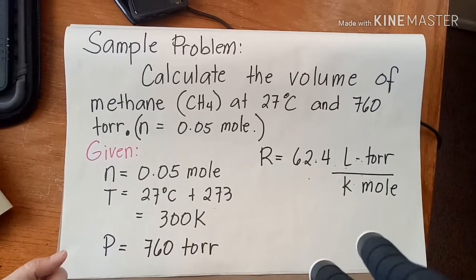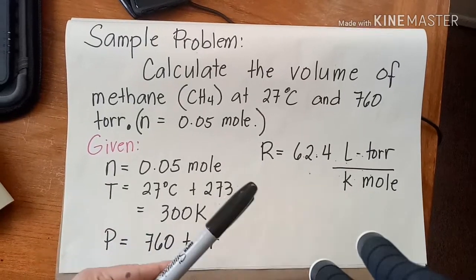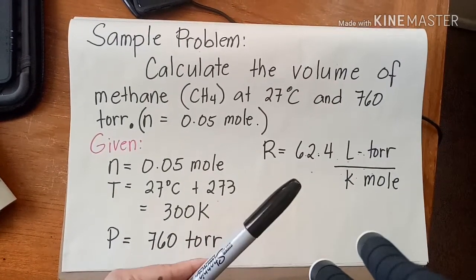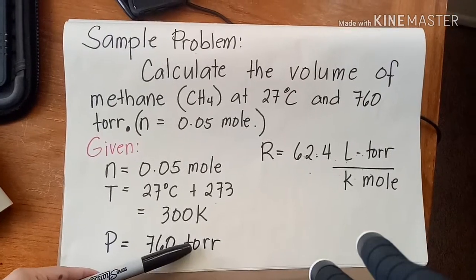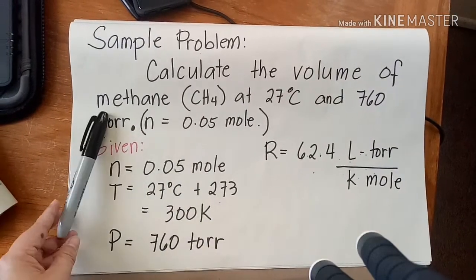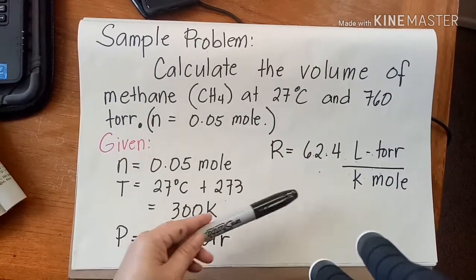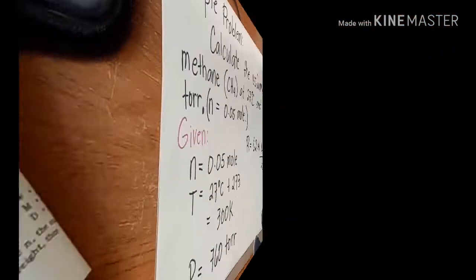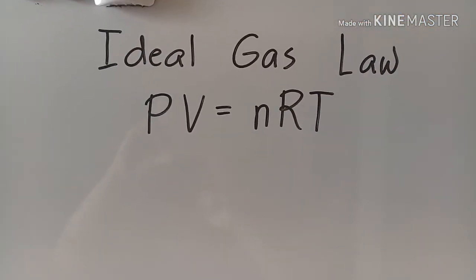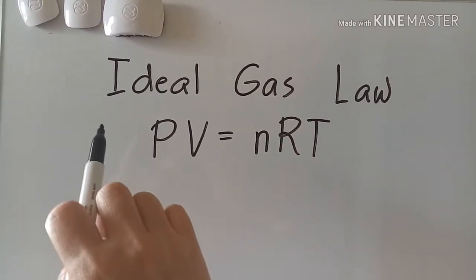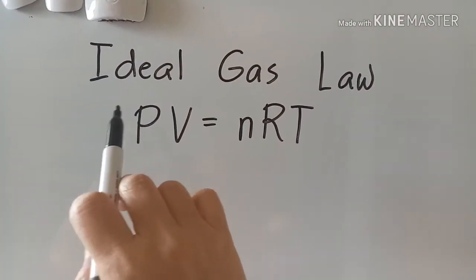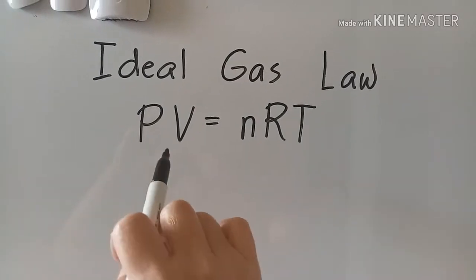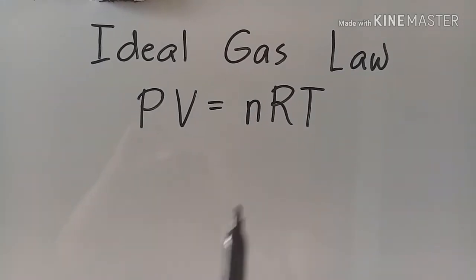For the gas constant, we'll be using 62.4 L·torr per K·mole, because the unit of pressure is expressed in torr. That's why we will be using this value of gas constant. Alright, so for the solution, we'll be using the formula of ideal gas law, which is PV equals nRT.